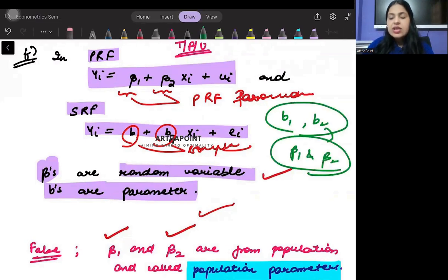So ideally, both of them theoretically mean the same thing. It's just that one corresponds to the sample and other corresponds to the population. So again, it's an incorrect statement. Both of them actually are parameters.